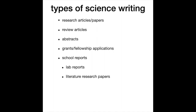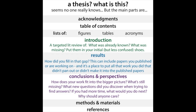Once you get to grad school, you're faced with writing a really long document called a thesis or dissertation. This is basically a grand overview of the important work you've done over the course of earning your doctorate. It includes a long introduction with a literature review, the results of your experiments, the conclusions from those experiments, how it fits into the bigger picture of the field, potential directions for moving forward, and then methods, materials, and references.